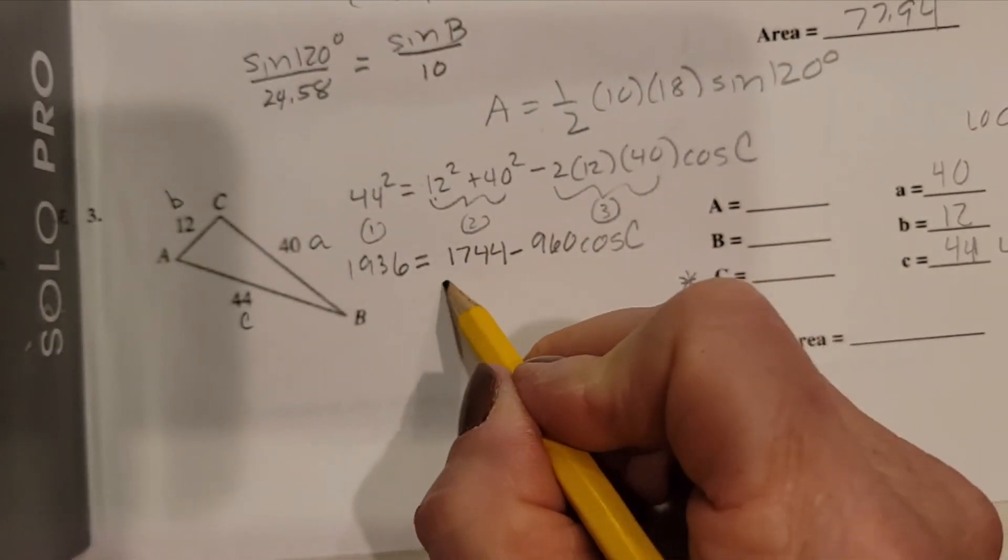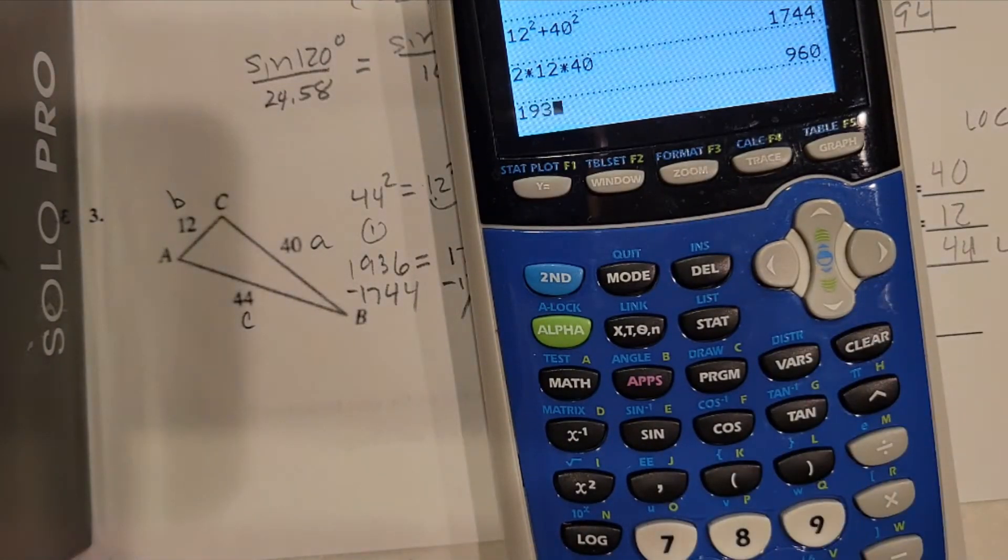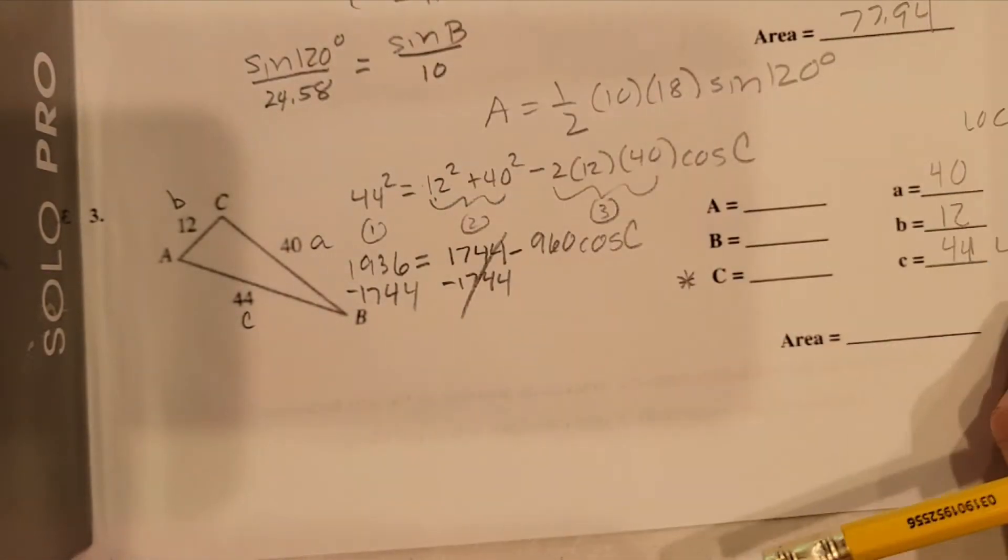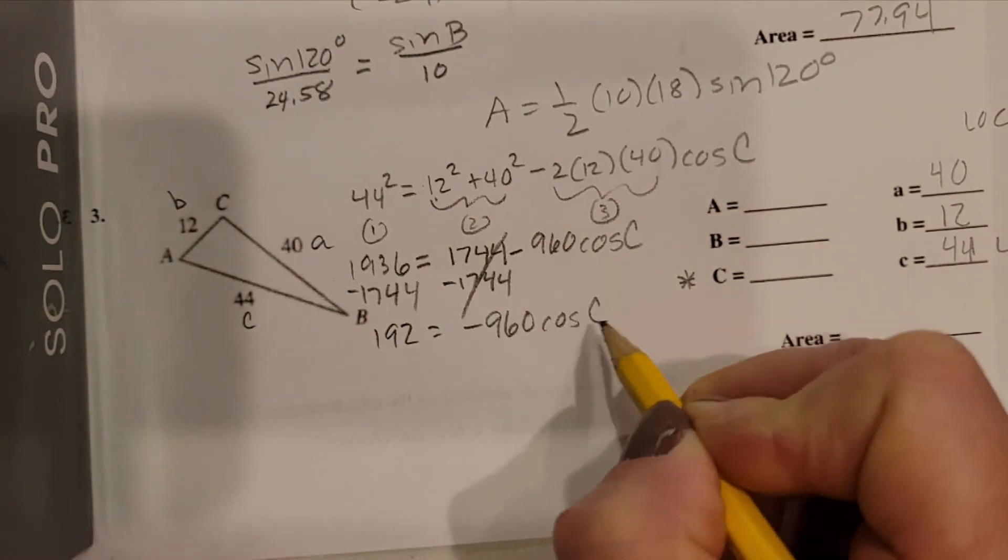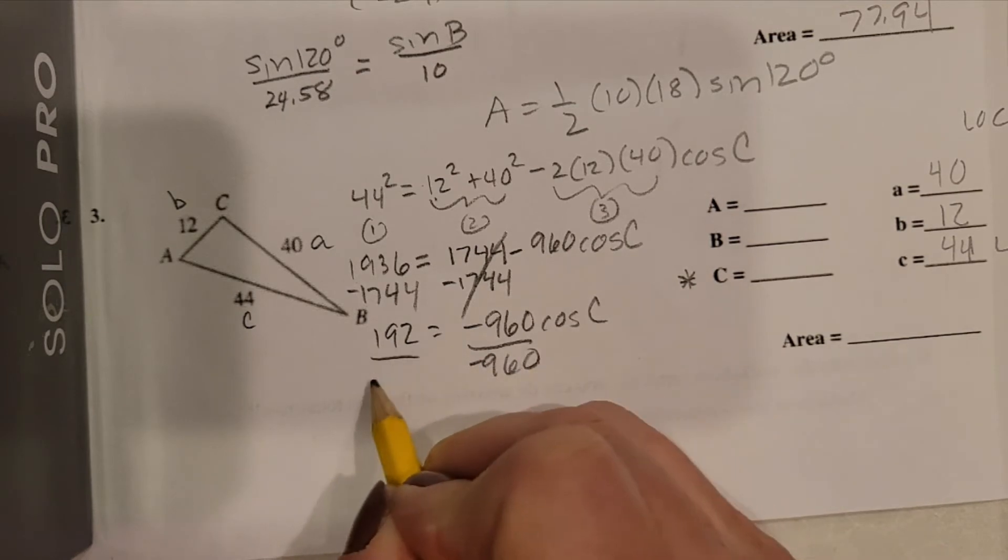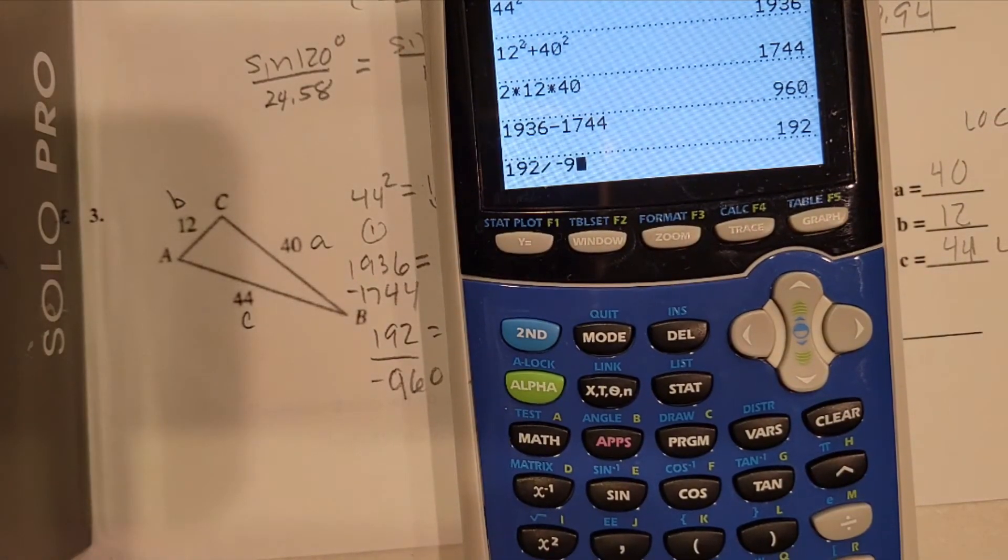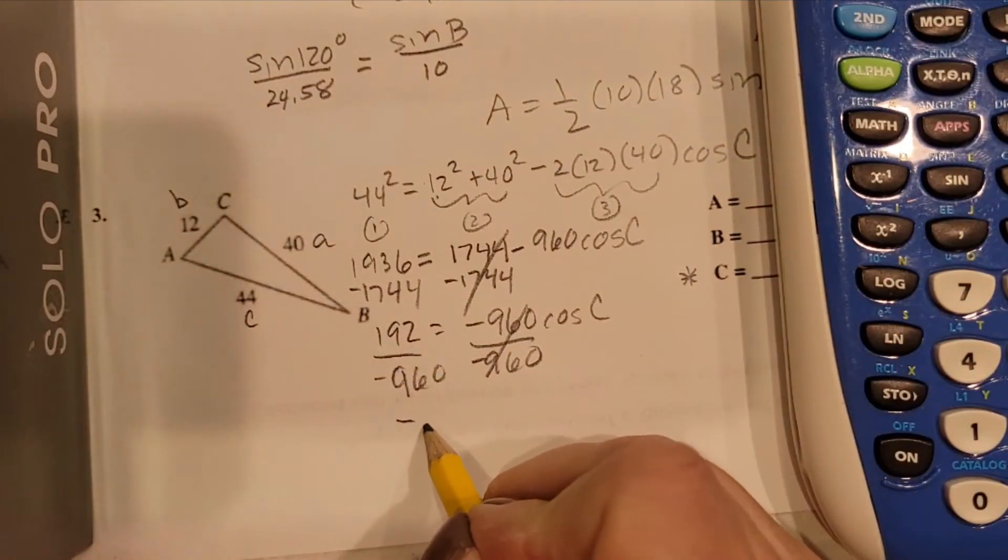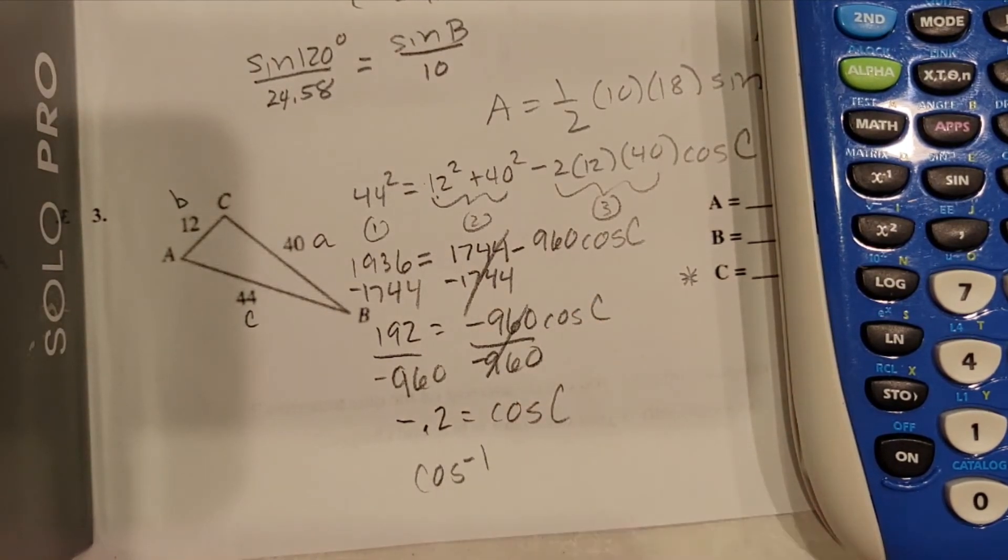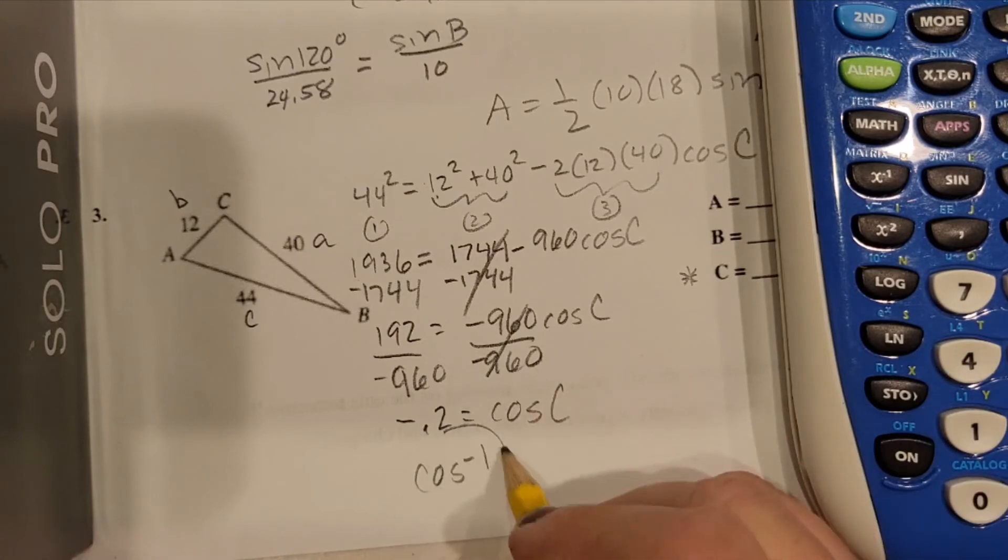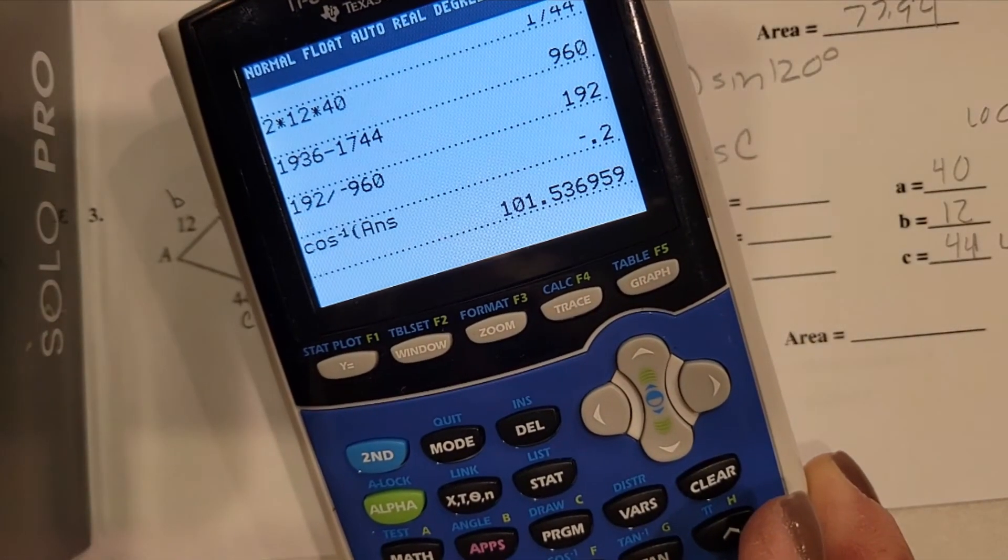So after I do my little 1, 2, 3, I always subtract. Always, always, always. 1936 minus 1744. 192. Now, this is still negative because I didn't get rid of the negative. I just got rid of the 1744. So I'm going to divide, which is always that next step. I got negative 0.2. But that's my cosine. That's not actually my angle. So whenever you're looking for an angle, your last move is inverse cosine of that answer. So if I do inverse cosine of that answer, I end up with 101.54.